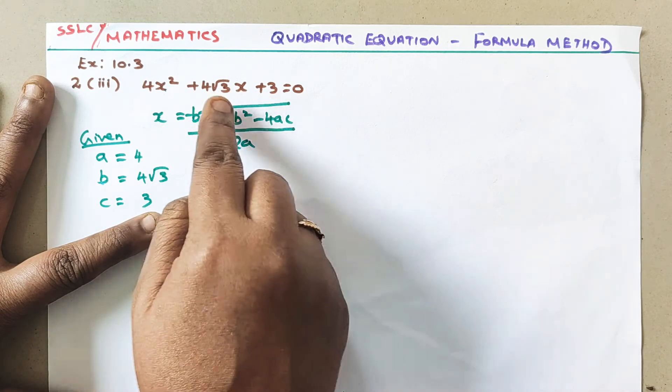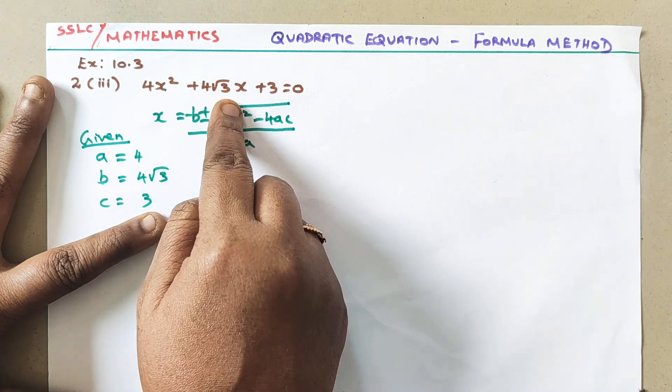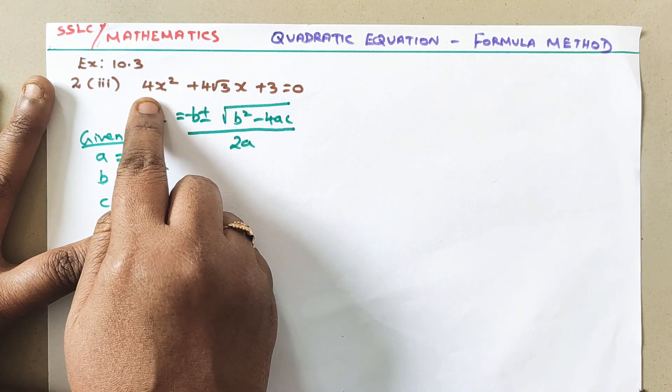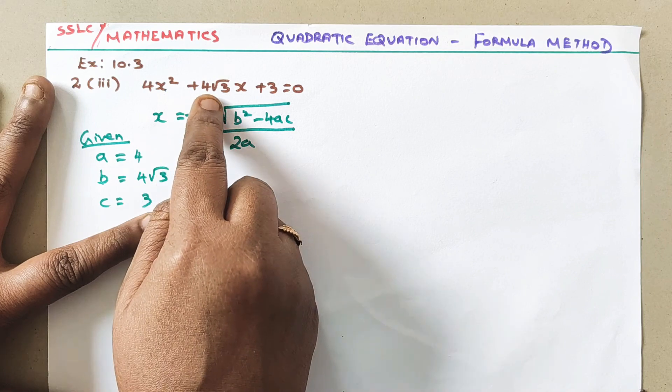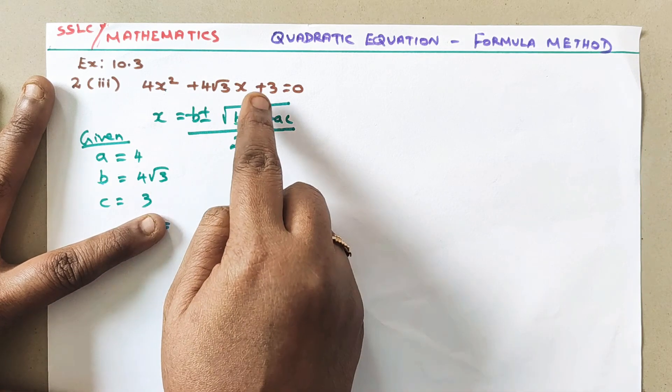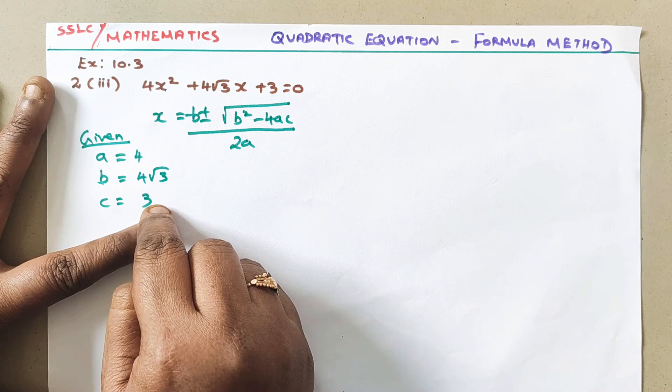After checking whether it is in order or not, then we should write the given. What is the given? In the place of a, here 4. In the place of b, 4√3. And in the place of c, here 3.